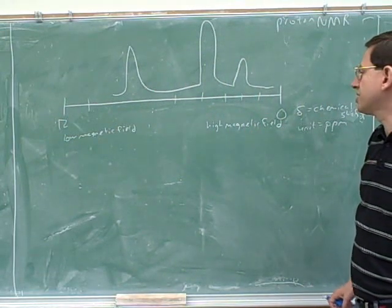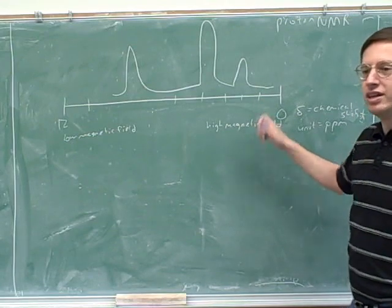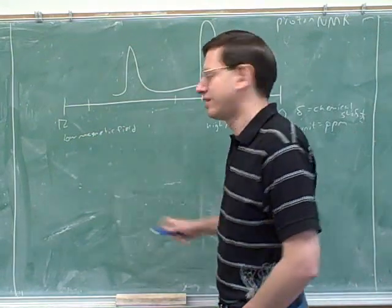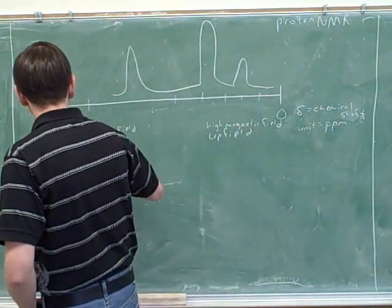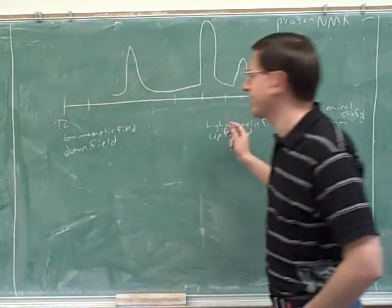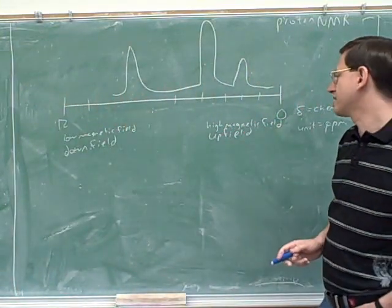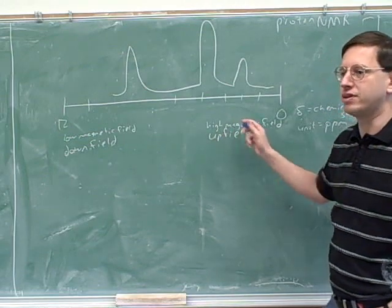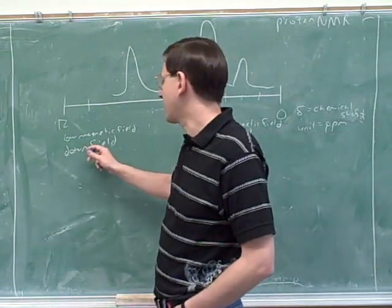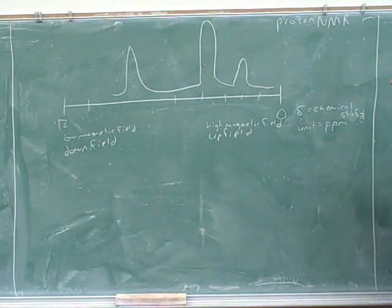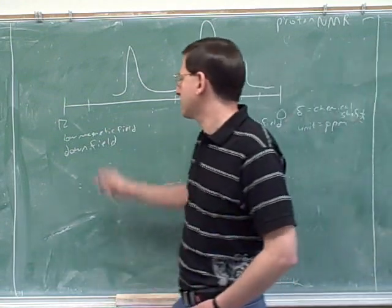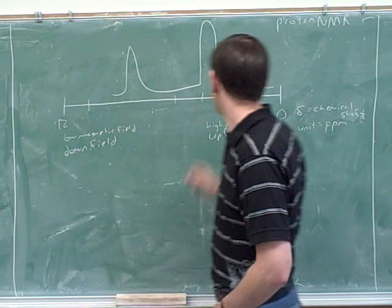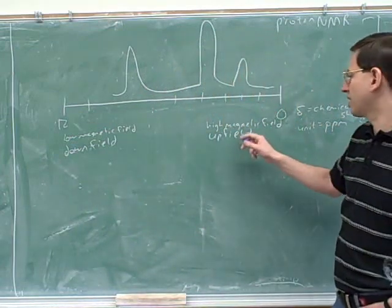So some important terminology then. This end here would be called upfield, and this would be called downfield. Upfield and downfield, and that's referring to the magnetic field. Upfield is the right-hand side where the absorptions occurred with a high magnetic field, and downfield is the left-hand side where the absorptions occurred with a low magnetic field. Notice that the chemical shift scale is inverse to the magnetic field level. A big chemical shift indicates low magnetic field and downfield, and a small chemical shift indicates high magnetic field and upfield.